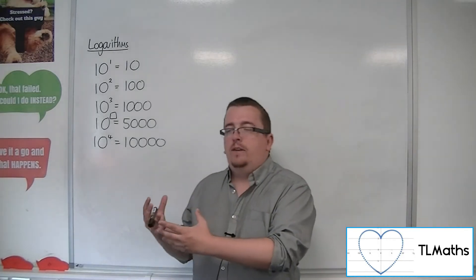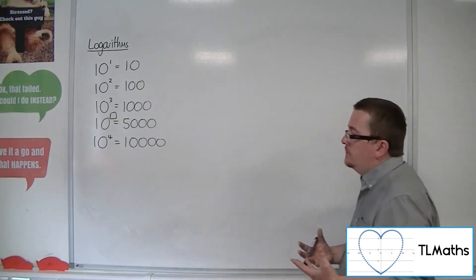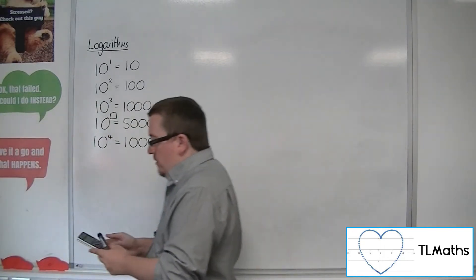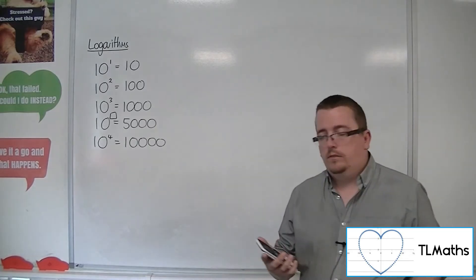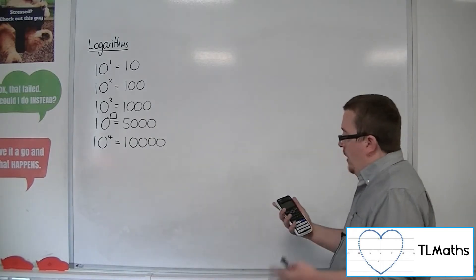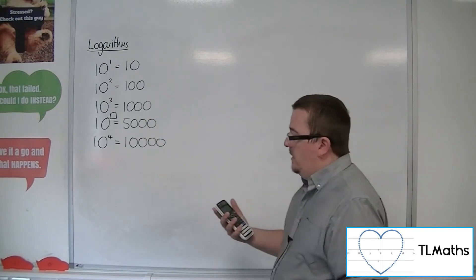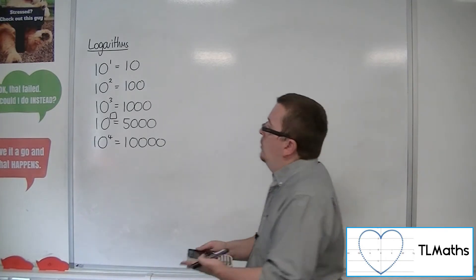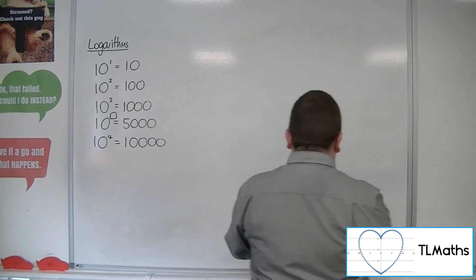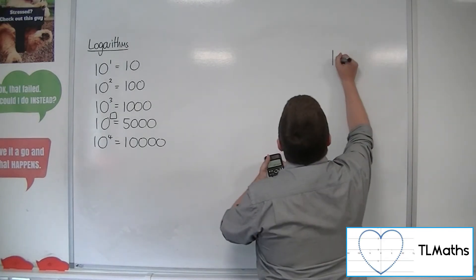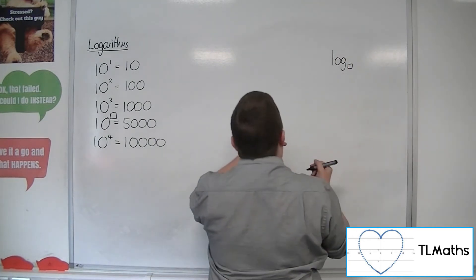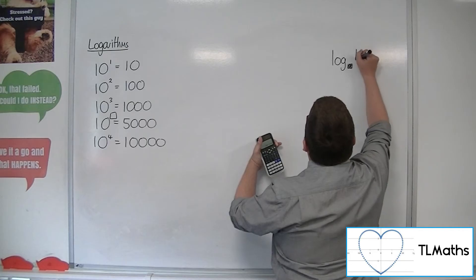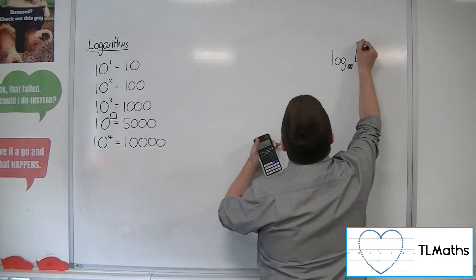You could use trial and improvement and home in on a fairly accurate answer, but can we write it down in an exact way? That's really the thing. On your calculator — I'm working with the Casio FX991EX ClassWiz — on a scientific calculator you will come across a button that looks like this: there is a log, a little filled-in box, and then an empty box. That's your button.